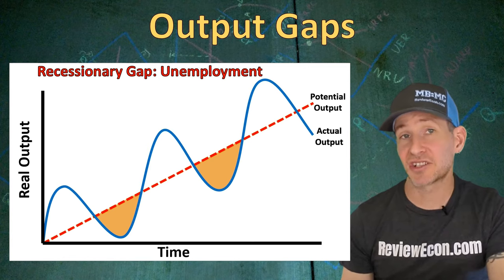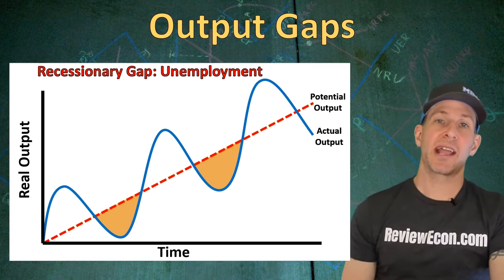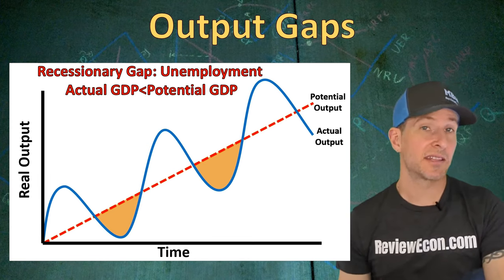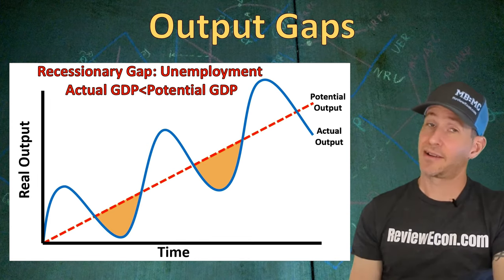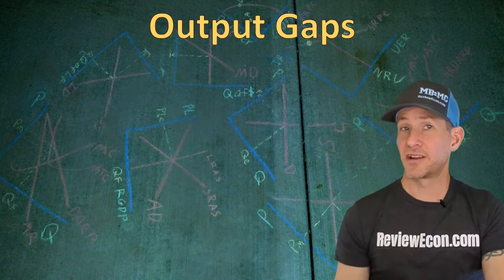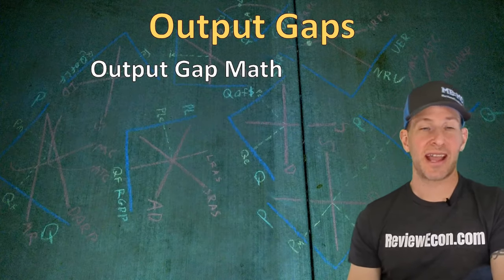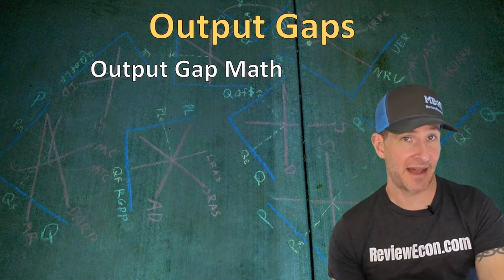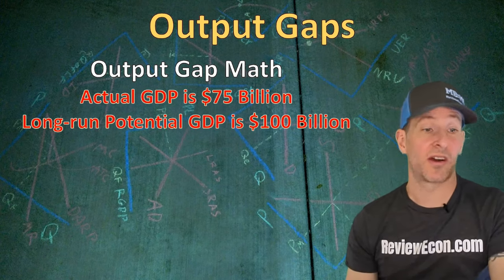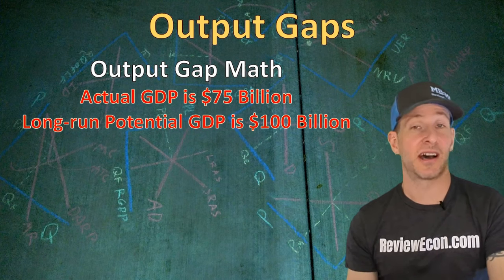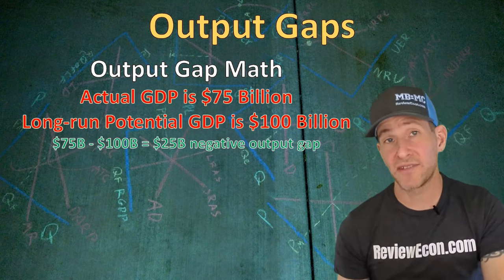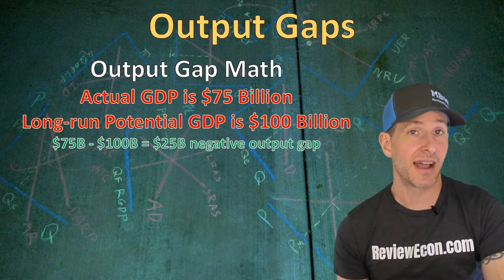When real GDP falls below potential output, we have a recessionary gap. With a recessionary gap, we have high unemployment — our country's GDP is less than potential GDP, and the unemployment rate is greater than the natural rate of unemployment. For example, if actual real GDP is $75 billion when long-run potential output is $100 billion, we have a negative output gap of $25 billion.